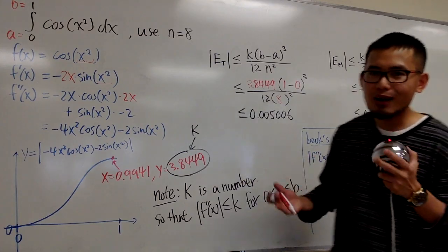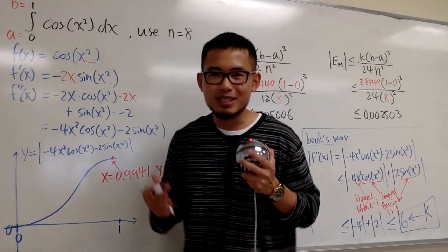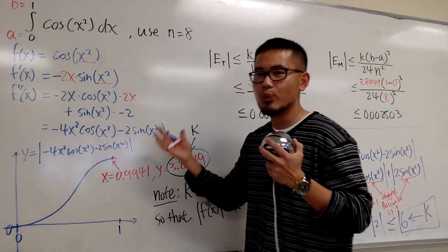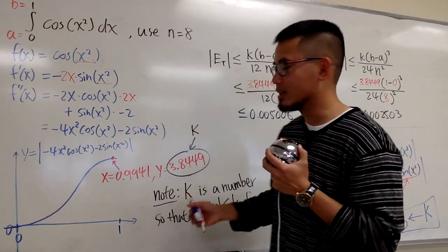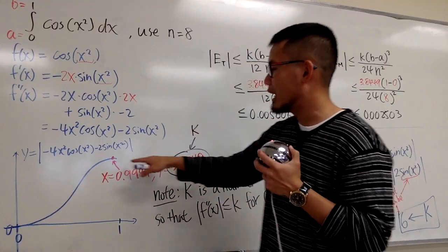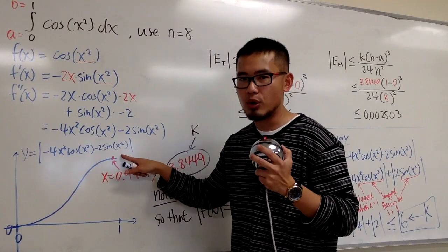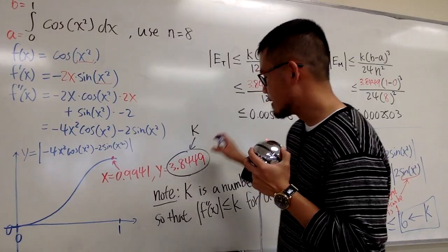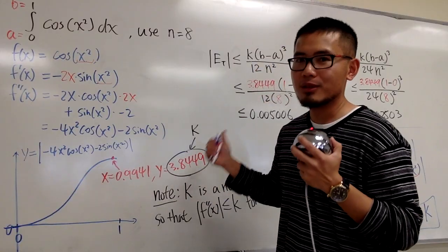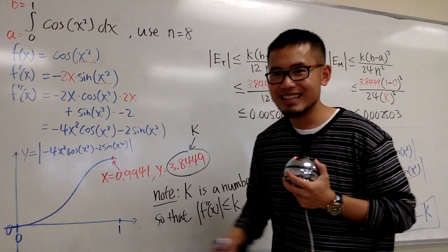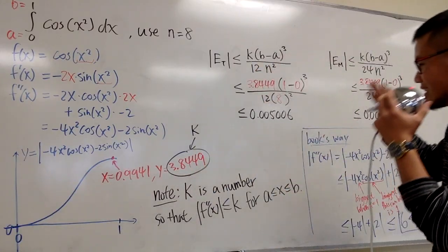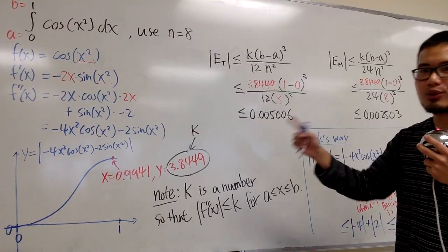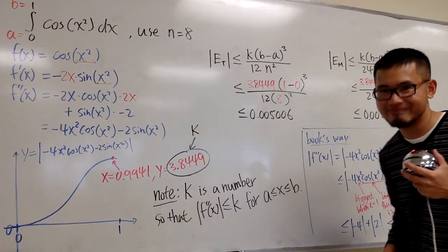That's how they come up with k = 6 in the book. But using the graphing calculator method is much more accurate because you actually find the true maximum of the second derivative. On the exam, use the graphing calculator method to find the k value.